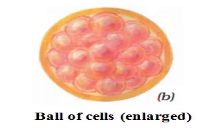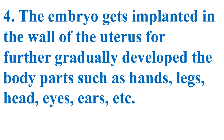Now this is the ball of cells as you can see. The embryo gets implanted in the wall of the uterus for further development, gradually developing body parts such as hands, legs, head, eyes, ears, etc.